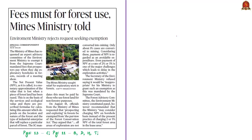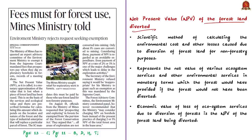Let us take up the next news article which mentions the term 'net present value' (NPV). In this context, NPV is the net present value of forest land diverted. It is a scientific method of calculating the environmental cost and other losses caused due to diversion of forest land for non-forestry purposes. It represents the net value of various ecosystem services in monetary terms which the forest would have provided — simply put, the economic value of loss of ecosystem services due to diversion or destruction of forests.